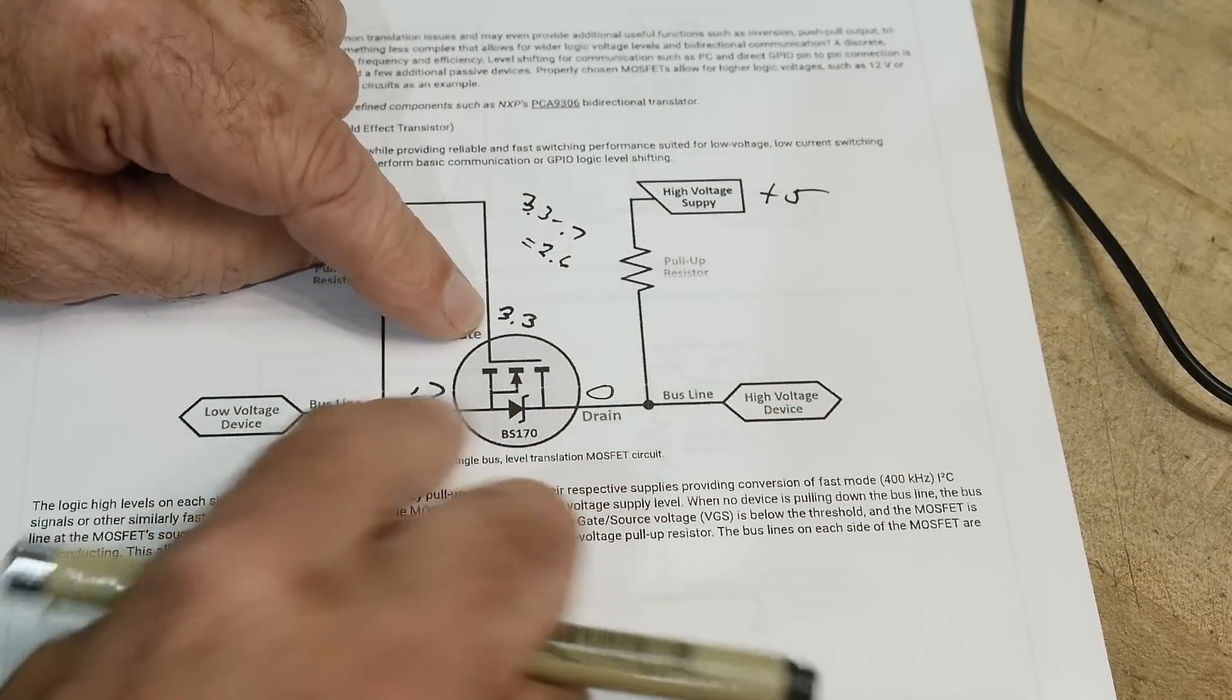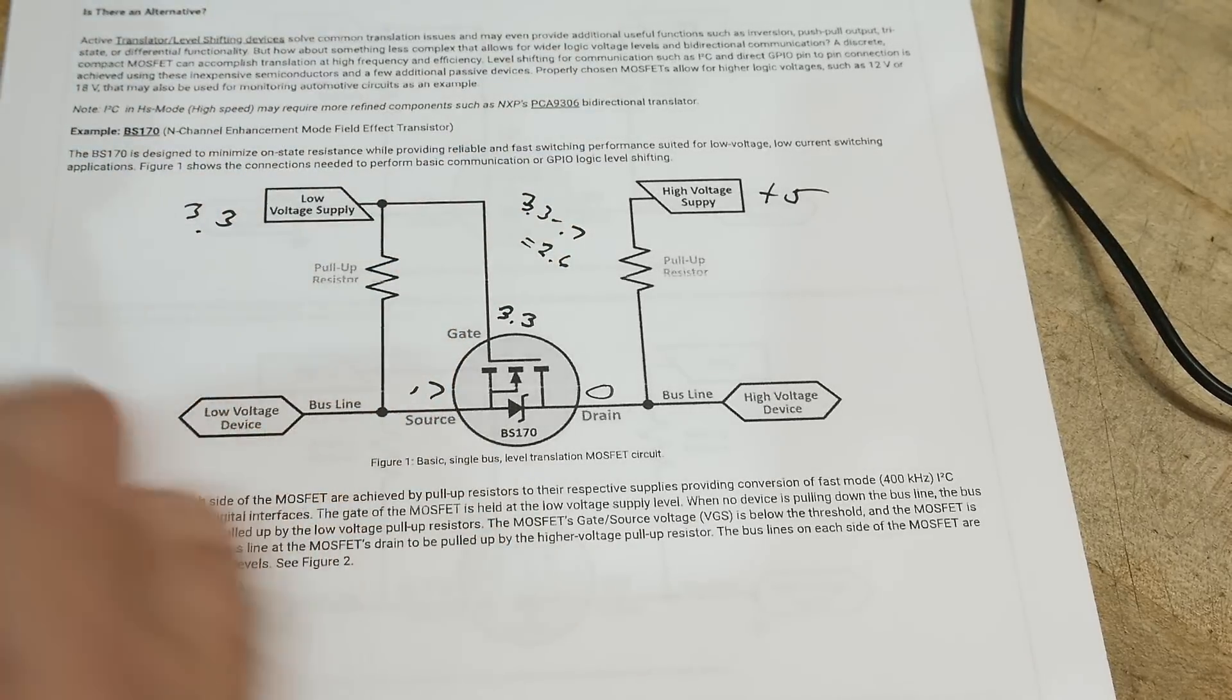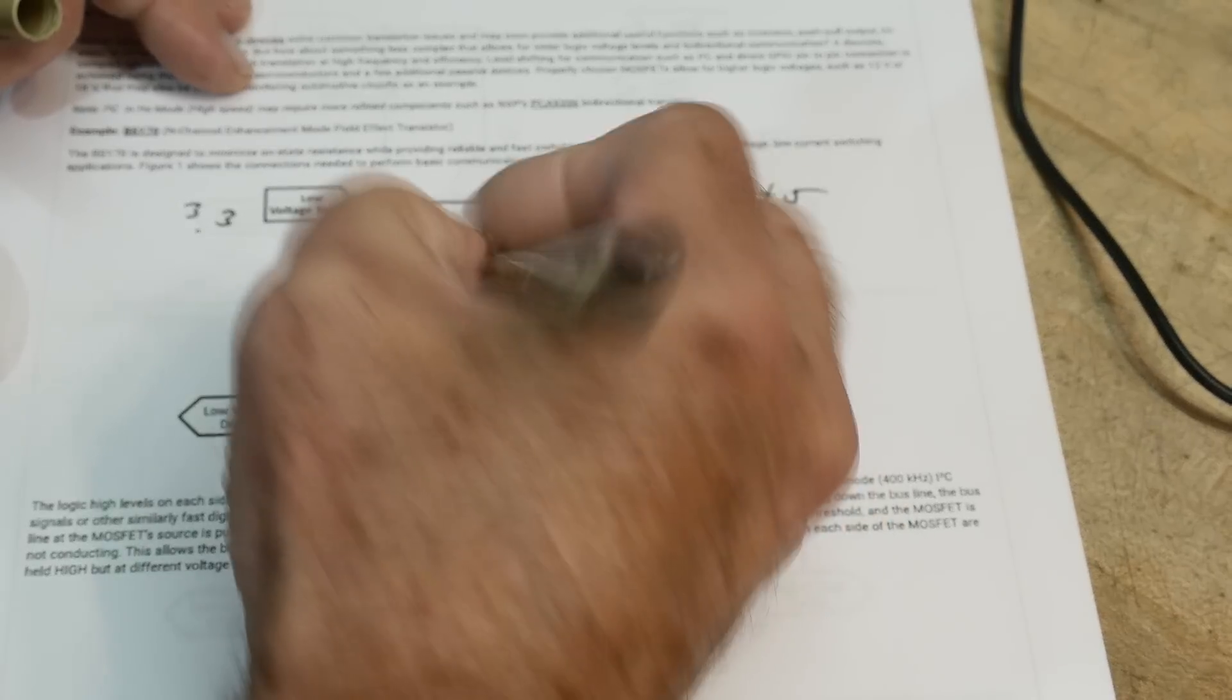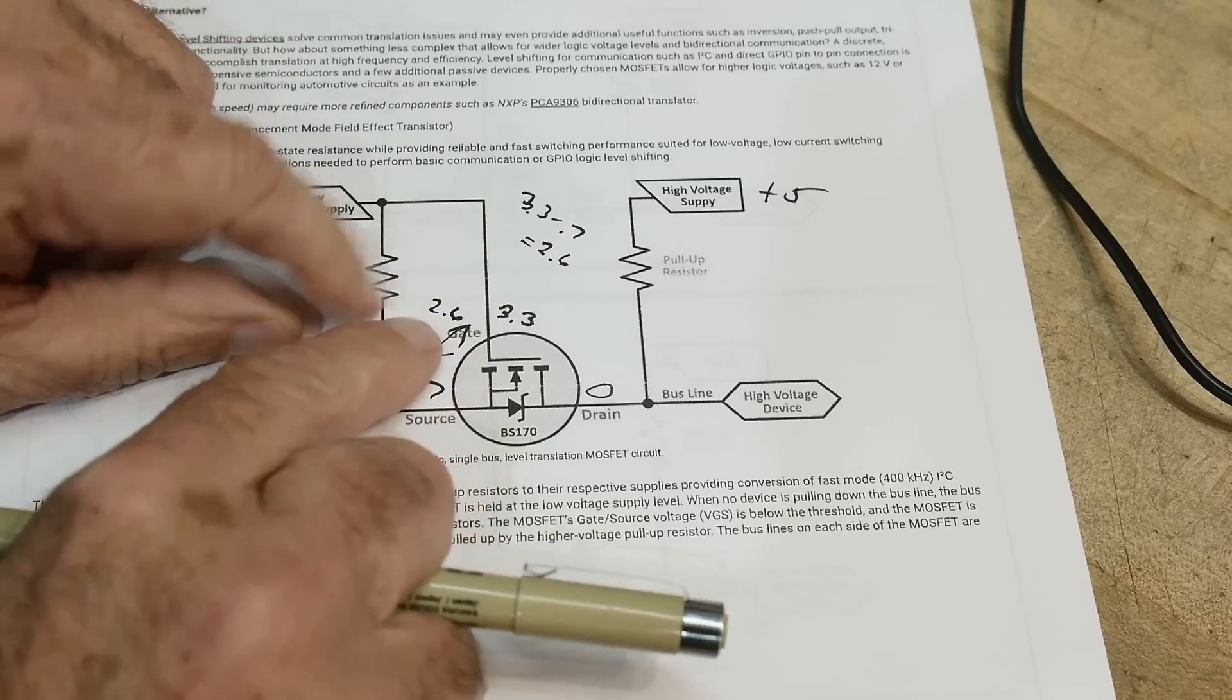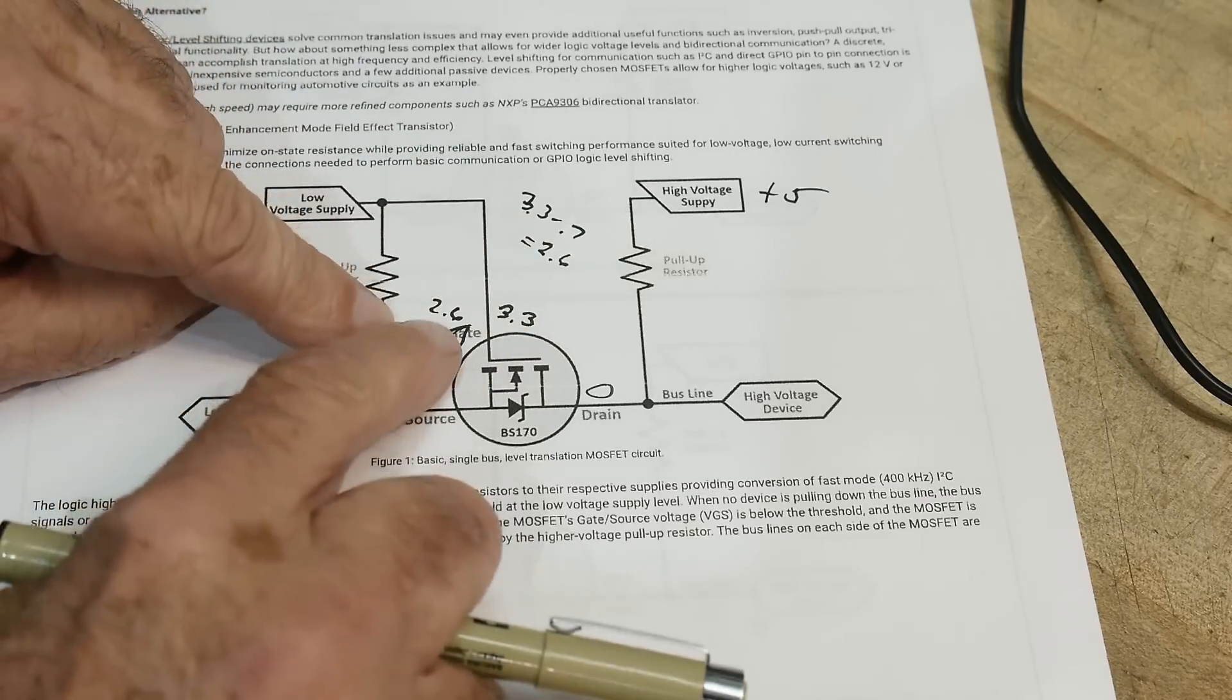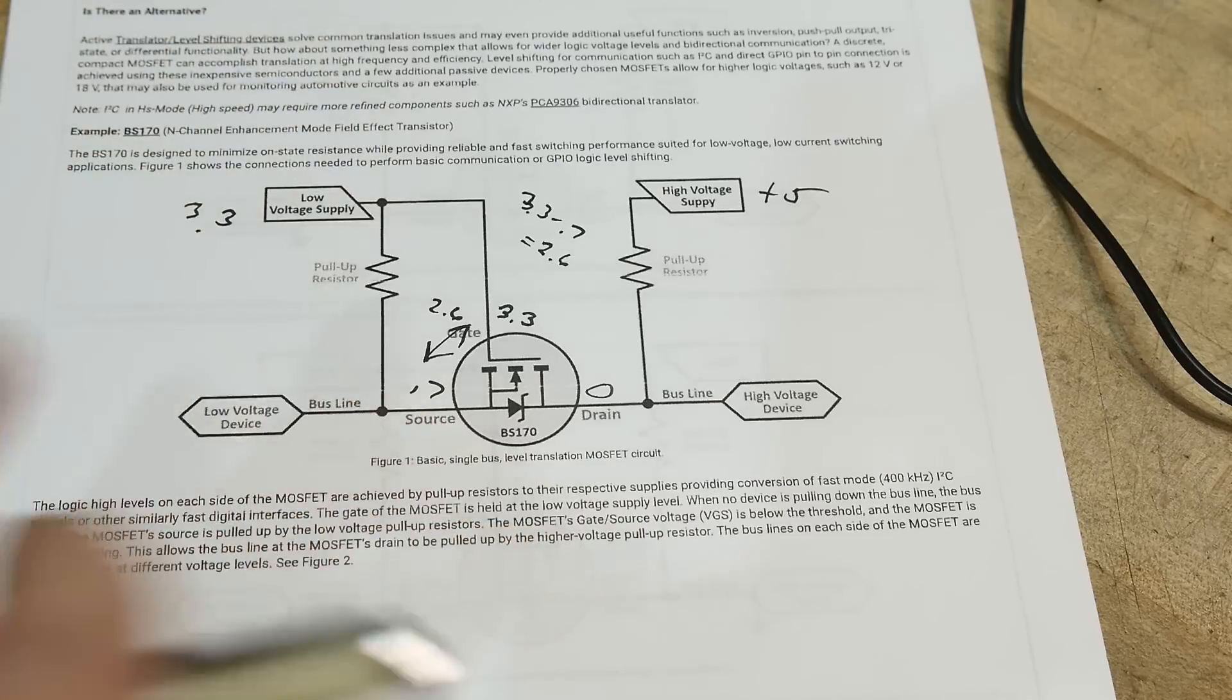But there's a problem with this 3.3 and this 0.7. If you take 3.3 and subtract 0.7, you get 2.6. So across the gate we have 2.6 volts. So we have to make sure when we buy our FET, it comes on at 2.6 volts. We want to make sure we have an FET that'll come on at 2.6 volts. Some FETs might only come on at 5 volts, and they're not going to do us any good.